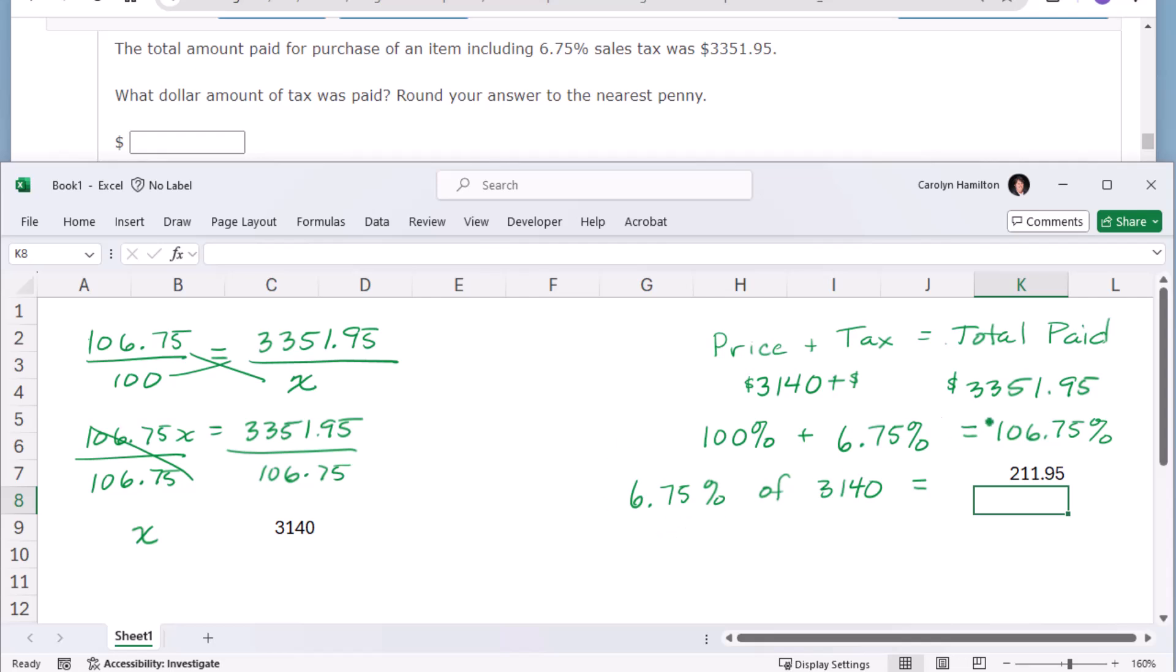But the simpler way to go about it would be just take your total that you paid, $3351.95, and subtract off what the original price was. Either way, the amount of tax is $211.95.